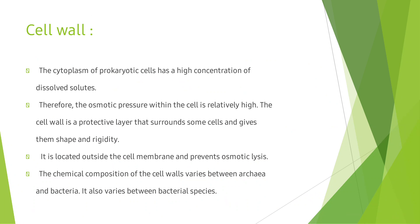Cell wall: the cytoplasm of prokaryotic cells has a high concentration of dissolved solutes. Therefore, the osmotic pressure within the cell is relatively high. The cell wall is a protective layer that surrounds some cells and gives them shape and rigidity. It is located outside the cell membrane and prevents osmotic lysis. The chemical composition of cell wall varies between archaea and bacteria, and also varies between bacterial species.